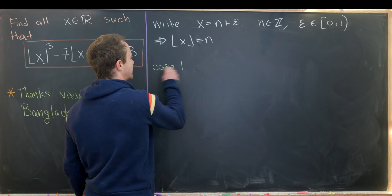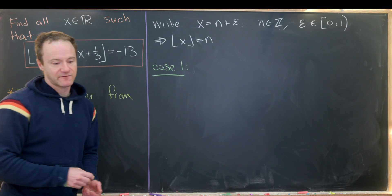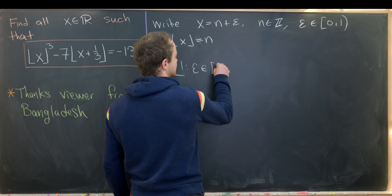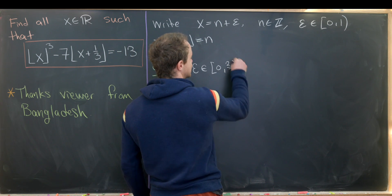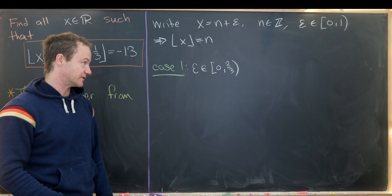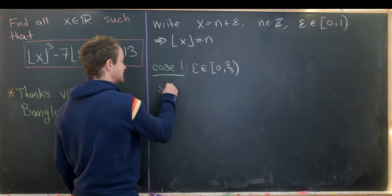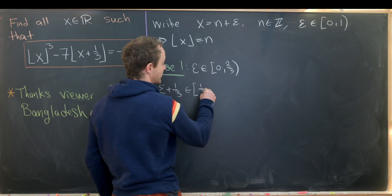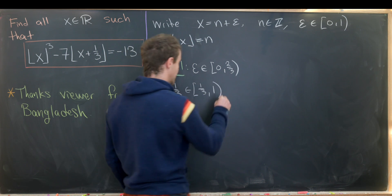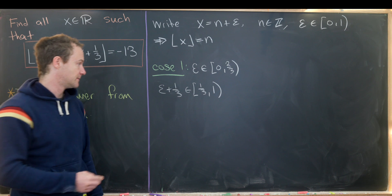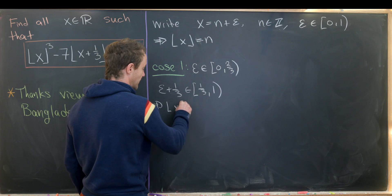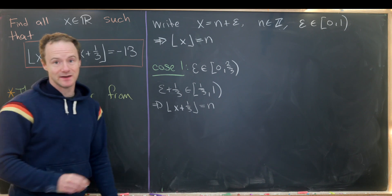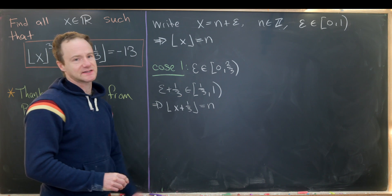So let's look at this first case. And that first case is if epsilon is on our interval 0 to two-thirds, not including two-thirds, but we can include 0. Now let's notice that means epsilon plus one-third is on the interval from one-third to 1, not including 1. And thus, the floor of x plus one-third is still equal to n because we haven't gone across to n plus 1.